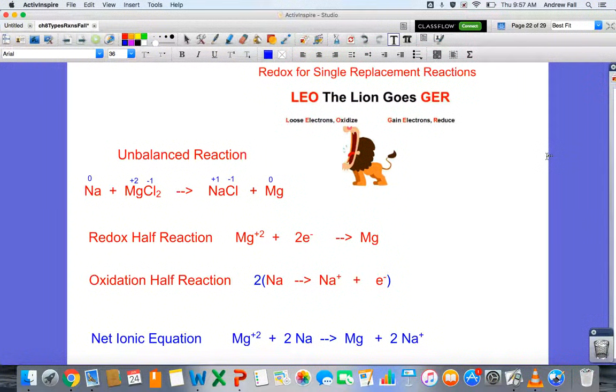Magnesium has a positive two charge as an ion in magnesium chloride. As the reactants convert to products, sodium chloride forms, and in its ionic state, sodium has a charge of positive one, chloride negative one.